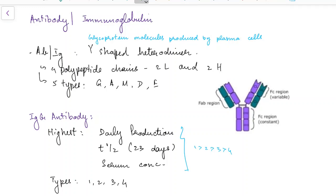First of all, let us see about an immunoglobulin or antibody. An immunoglobulin or antibody is basically a glycoprotein molecule produced by plasma cells. It is a Y-shaped heterodimer. It has four polypeptide chains: two light chains and two heavy chains.